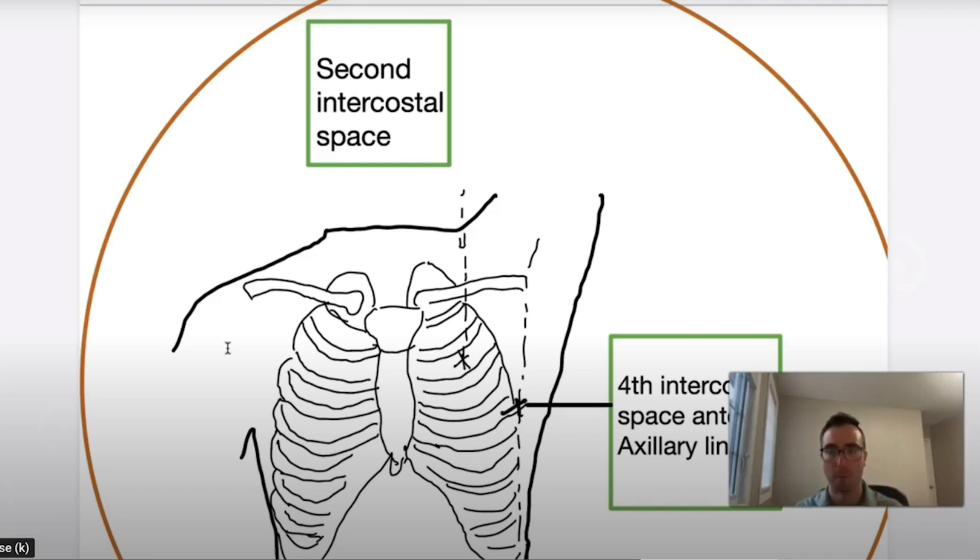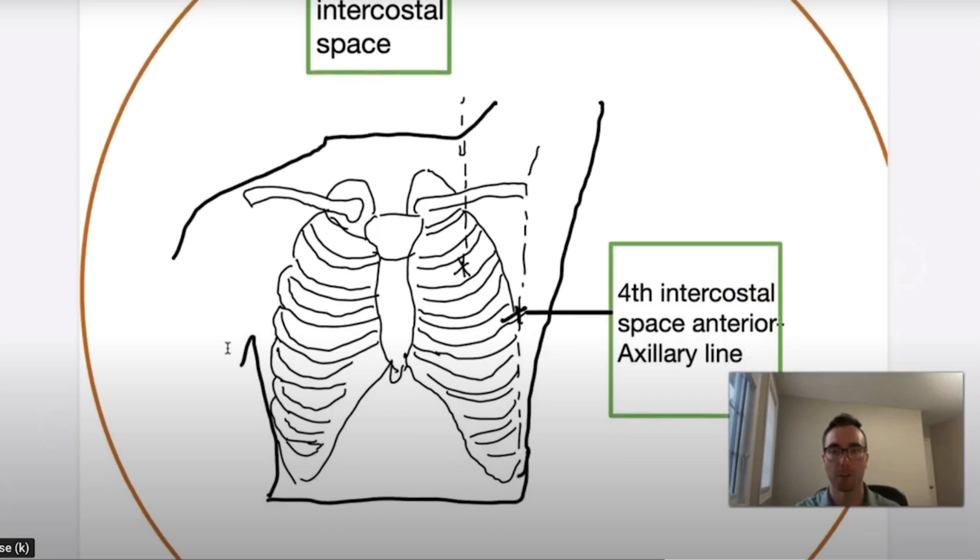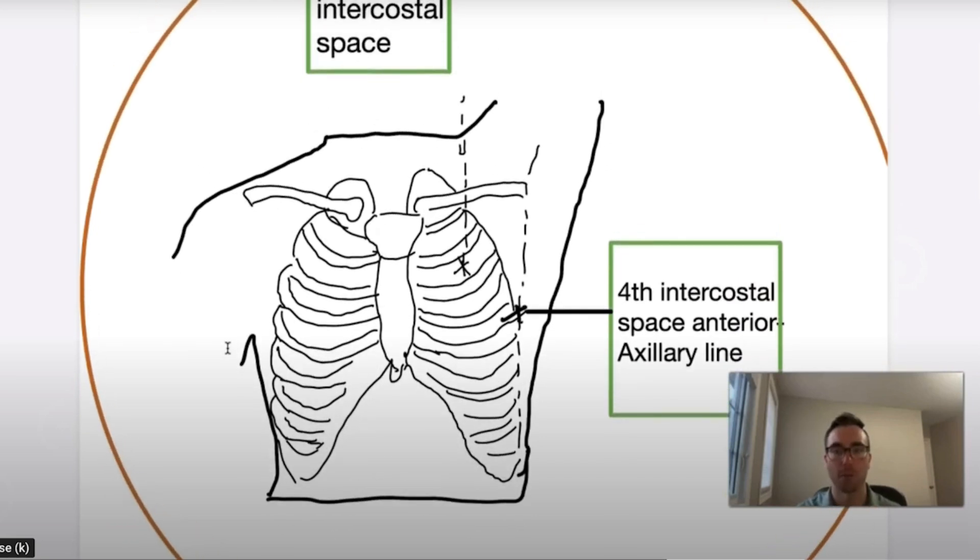So that's going to be problematic because in the fourth intercostal space anterior axillary site, that site actually has a higher success rate, lower complications, and to actually hit the pleural space. However, in adult patients in our catchment area, you still can use the second intercostal space depending on the patient's injuries, your comfort level, logistics. You still can use the site, just documenting why. But again, the fourth intercostal space anterior axillary line is the preferred site.